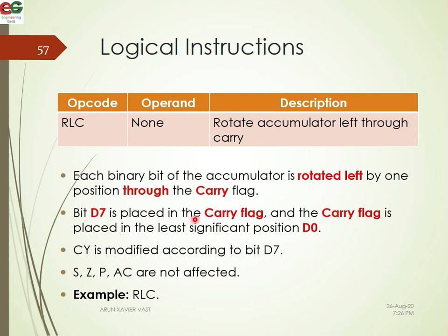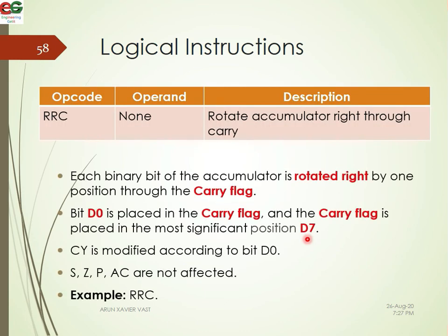In RAL, D7 is placed into the carry flag, and the carry flag value is placed into D0. Bits shift: each bit moves left by one position, and the old carry flag fills D0 while D7 goes into the carry flag.